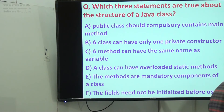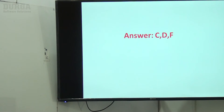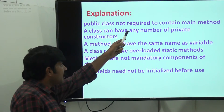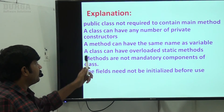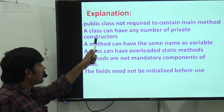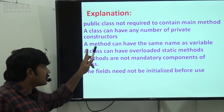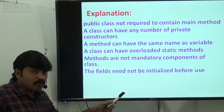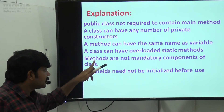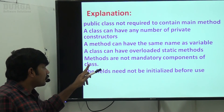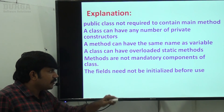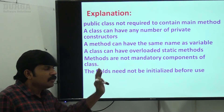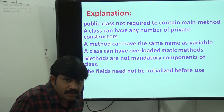To summarize: a public class is not required to contain a main method; a class can have any number of private constructors; a method can have the same name as a variable; a class can have overloaded static methods; methods are not mandatory components of a class; and the fields need not be initialized before use. These are the valid statements — C, D, and F are the correct answers.